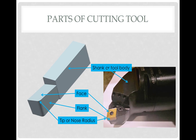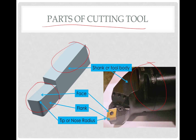Here we will quickly revise the different parts of the cutting tool. This is the shank — in the actual tool you can see this body, which is called the tool holder or shank, which holds the tool body in the machine and is connected to the machine. The face is that part of the tool over which chips slide. The flank is that part of the tool body which is very adjacent to the cutting edge — this face is called the flank, or the clearance face.